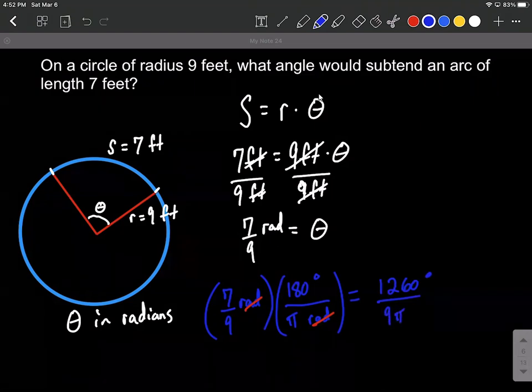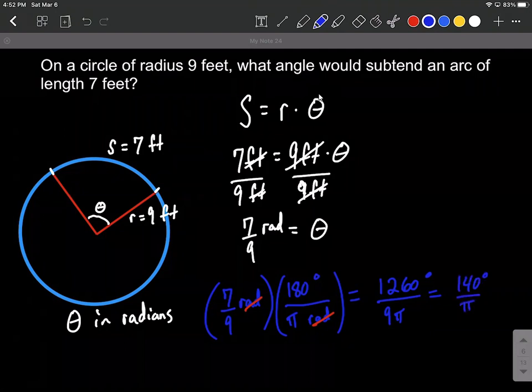That's an exact answer. We can get a little bit more reduced, better exact answer, because the numerator is a multiple of nine and the denominator is as well. So we can reduce down by taking out a nine. So we can say 140 degrees over pi or 140 over pi degrees.